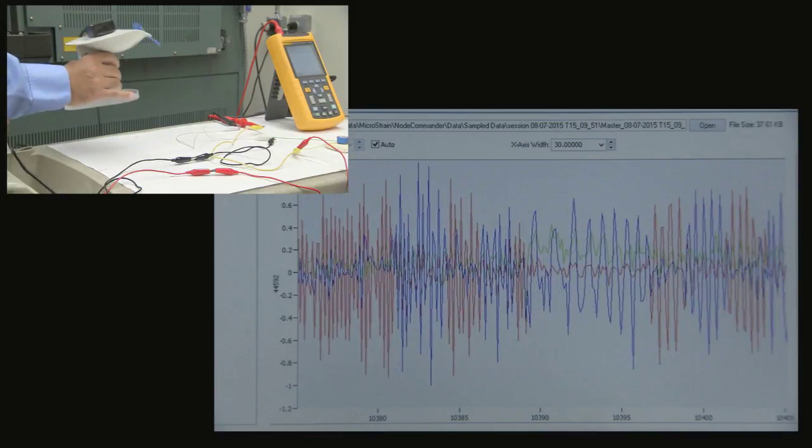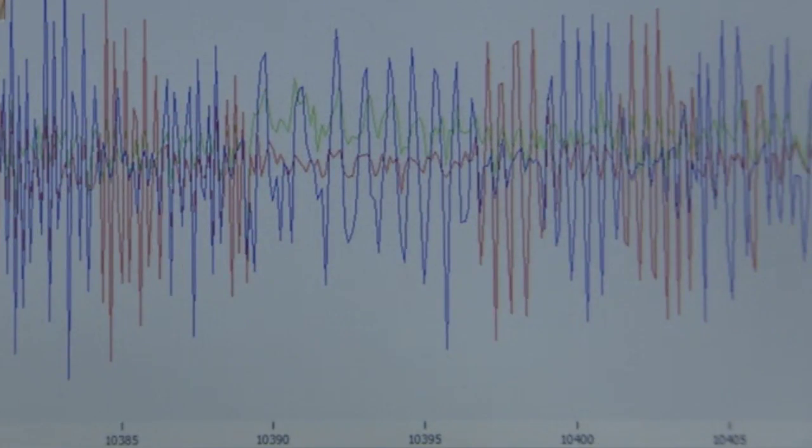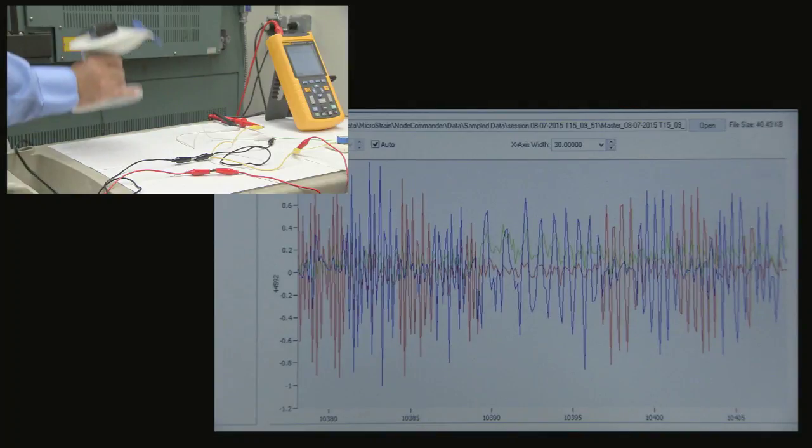And the blue, the green, and the red signals indicate the location of the mock aircraft in X, the Y, and the Z direction.